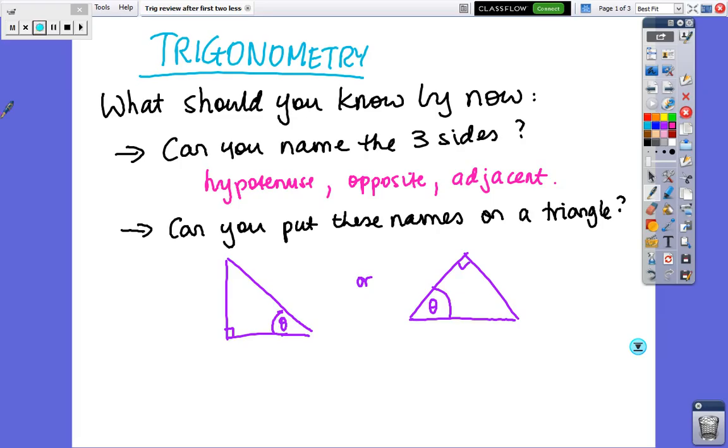Ok, you hopefully had, I'll change the color. Opposite the right angle is the hypotenuse. Change color. Opposite the angle is the opposite, and then the third side must be the adjacent.